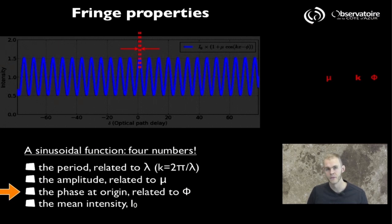And the last number that also matters happens to be the average intensity, which we've labeled I₀, which is simply the total amount of flux we acquire over a scan of fringes.